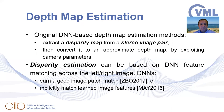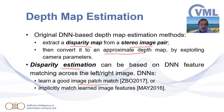Originally, DNN-based approaches extracted the disparity map from a stereo image pair and converted it to an approximate depth map using the camera parameters. Disparity estimation can be based on DNN feature matching between the left and right image. We can learn good image patch matches and implicitly learn how to match image features.